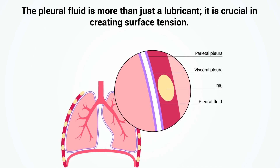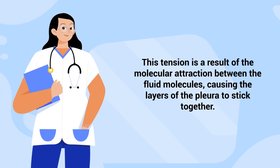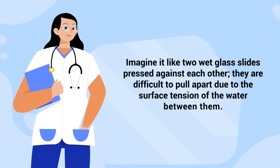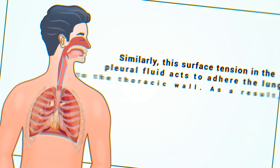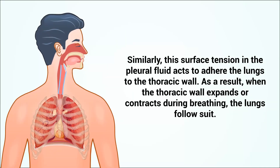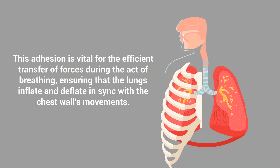The pleural fluid is more than just a lubricant — it is crucial in creating surface tension. This tension is a result of the molecular attraction between the fluid molecules, causing the layers of the pleura to stick together. Imagine it like two wet glass slides pressed against each other: they are difficult to pull apart due to the surface tension of the water between them. Similarly, this surface tension in the pleural fluid acts to adhere the lungs to the thoracic wall, so when the thoracic wall expands or contracts during breathing, the lungs follow suit. This adhesion is vital for the efficient transfer of forces during breathing, ensuring that the lungs inflate and deflate in sync with the chest wall's movements.